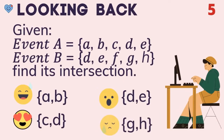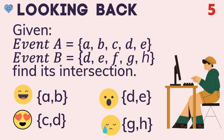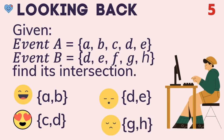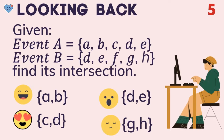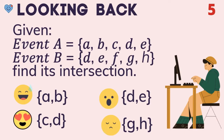Last review question: given event A equals the set {A, B, C, D, E} and event B equals the set {D, E, F, G}, find their intersection. The correct answer is the set {D, E}.